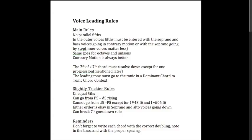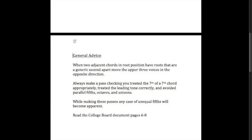A few reminders from the basics of part writing: remember to write each chord with the correct doublings — don't double the third or the seventh, and don't leave out the third, root, or seventh. Remember to put the correct note in the bass based on the inversion symbols, and don't make it so that the voices are more than an octave apart or crossing. In general, when two adjacent chords in root position have roots a generic second apart, move the upper three voices in the opposite direction from the bass. For example, in a IV–V in C major, the bass goes up, so your upper three voices should move down. That way you avoid everything moving up in parallel.